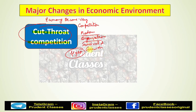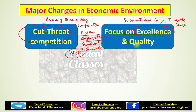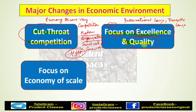Now let's talk about the second change in the economic environment, and that is focus on excellence and quality. Modern organizations have customers who need excellence. Multinational organizations have to follow international laws and international standards. For this reason, you have to make the product and service excellent and perfect, good in quality. So the second change in the economic environment for modern organizations is focus on excellence and quality.